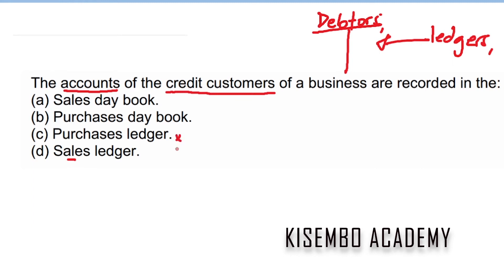The purchases ledger is for suppliers from whom we get goods on credit. The question is saying that the accounts of credit customers — debtor books do not have ledger accounts, so these two can't be part of the answer. The answer is D: the sales ledger.